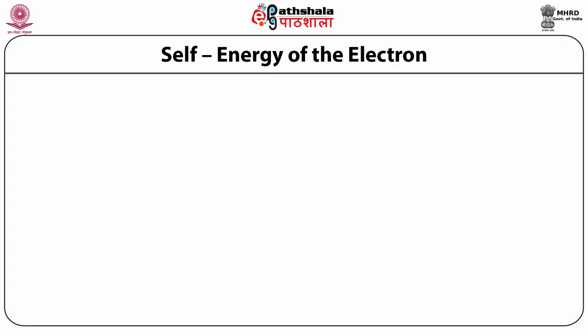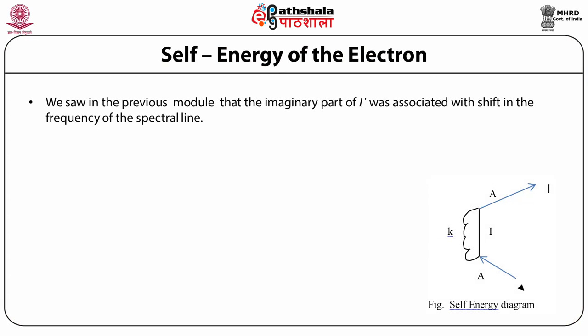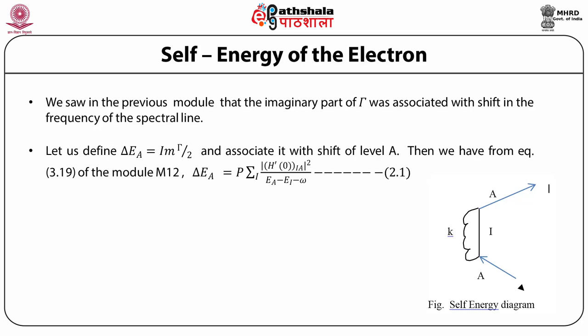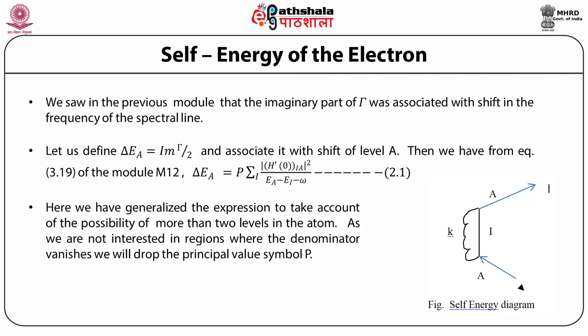We first discuss the self-energy of the electron. We saw in the previous module that the imaginary part of gamma was associated with shift in the frequency of the spectral line. Let us define delta Ea equal to the imaginary part of gamma by 2 and associate it with shift of the level A. Then we have from equation 319 of module M12 that delta of Ea is the principal value part of the matrix element of Hi between I and A mod squared divided by E_A minus E_I minus omega. Here we have generalized the expression to take account of the possibility of more than two levels in the atom.